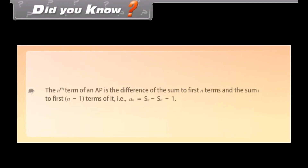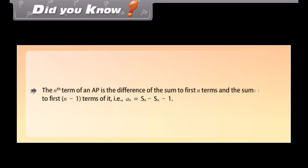Did you know? The Nth term of an AP is the difference of the sum of the first N terms and the sum of the first (N minus 1) terms, that is, AN equals SN minus S(N minus 1).